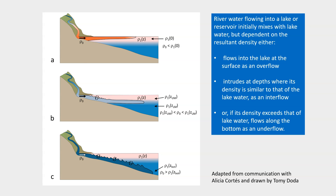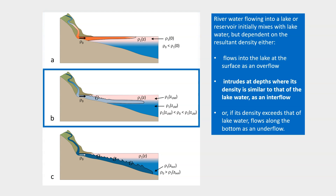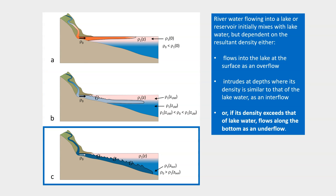River water flowing into a lake or reservoir initially mixes with lake water, but dependent on the resultant density, either flows into the lake at the surface as an overflow, intrudes at depths where its density is similar to that of the lake water as an interflow, or if its density exceeds that of lake water, flows along the bottom as an underflow.